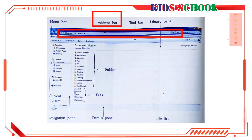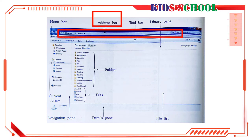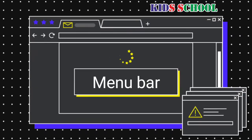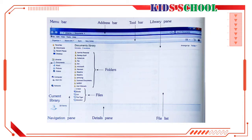Address Bar: Dear students, the address bar shows the address of the library you have opened. Use the address bar to navigate to a different folder or library, or to go back to a previous one. In this picture, the address bar shows 'Libraries > Documents,' which means that Documents is stored in Libraries.